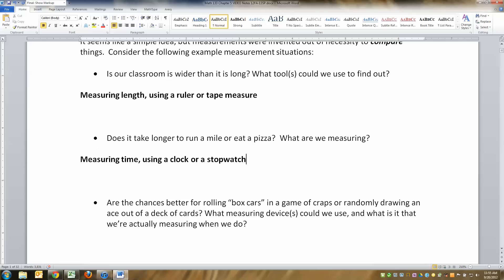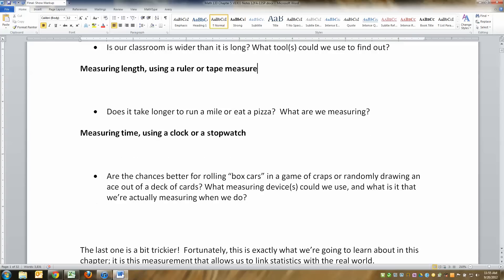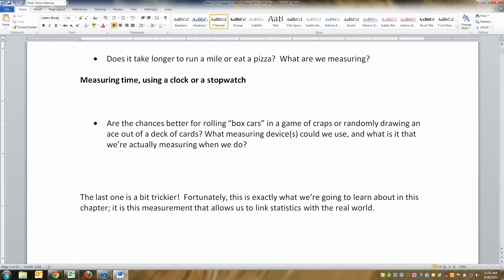If you go to a science teacher, they'll tell you that these things are important. Knowing how to measure length is important, knowing how to measure time is important. Any science class will talk about measuring the density of this mixture or liquid, or the viscosity of this. But what they don't say all the time in science class, but it's just as important, is odds. Are the chances better for rolling boxcars in a game of craps or randomly drawing an ace out of a deck of cards? What measuring device could we use? The answer is we're measuring odds, or the future, or unknown events, things that you can't know for sure or things that haven't happened yet. We use probability to do that.